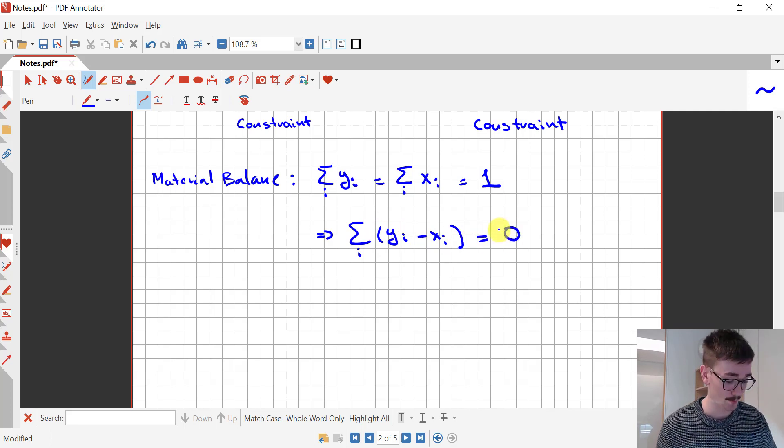We can rewrite this in the following way. A sum for all the components of the yi minus the xi, which has to be equal to zero. This is the equation we're going to be using.